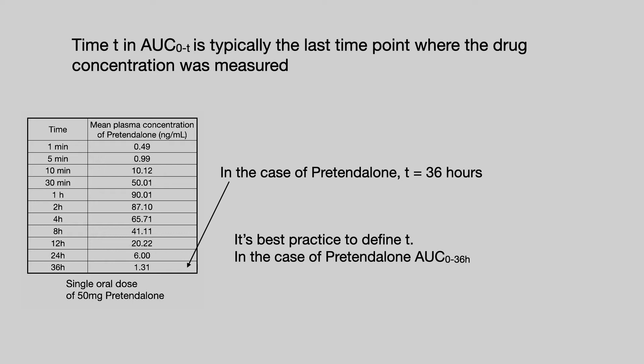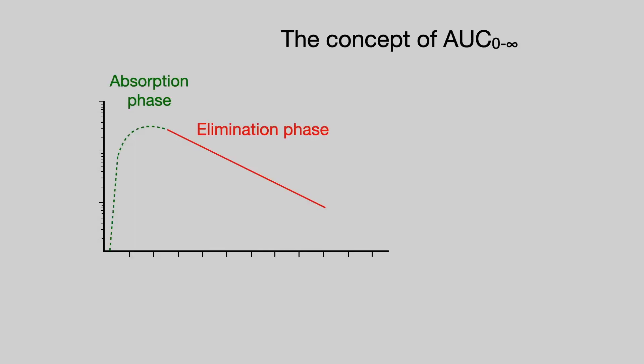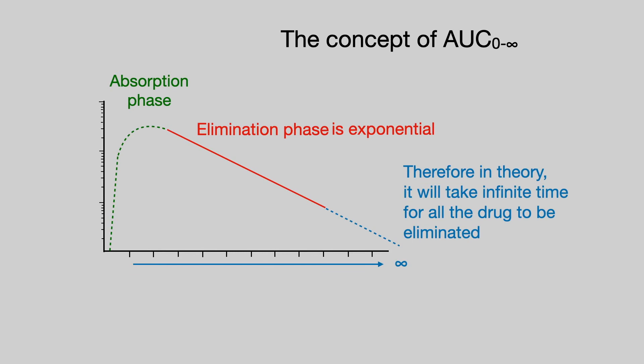Going back to our concept of exposure, if we calculate the AUC between 0 and 36 hours, we are calculating the exposure of the drug over that time period. Now let's look at AUC naught to infinity. The elimination phase is exponential, and so in theory it will take infinite time for all of the drug to be eliminated. AUC naught to infinity therefore represents the total exposure to the drug.